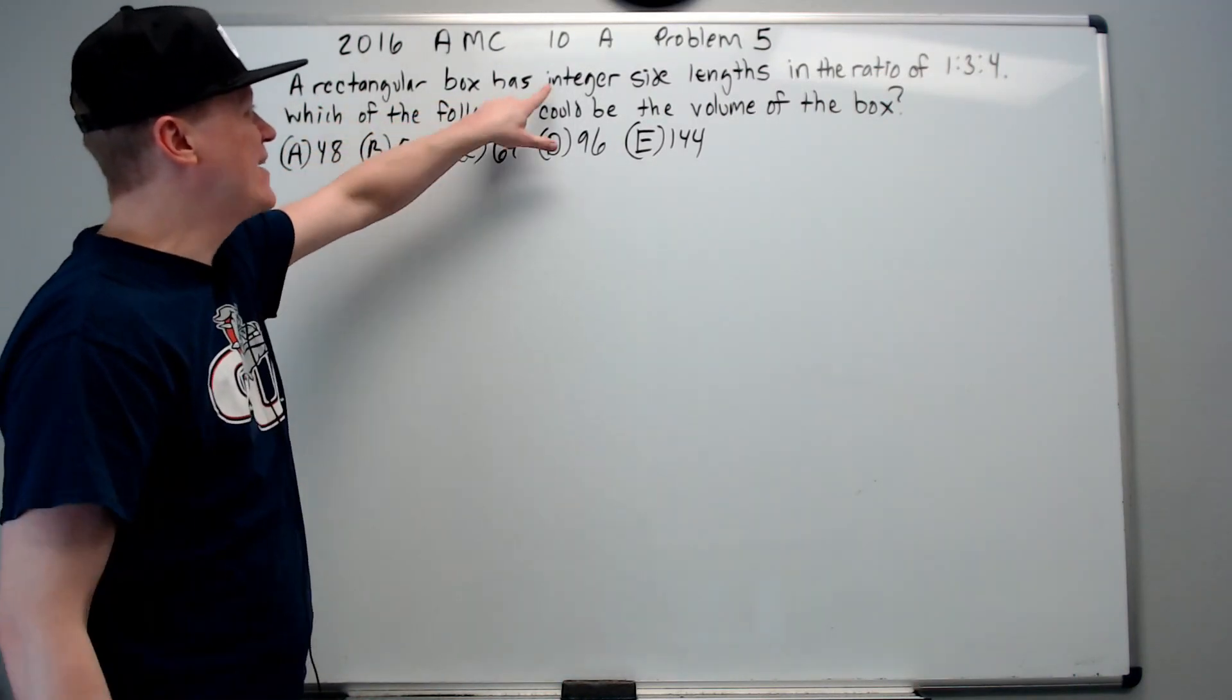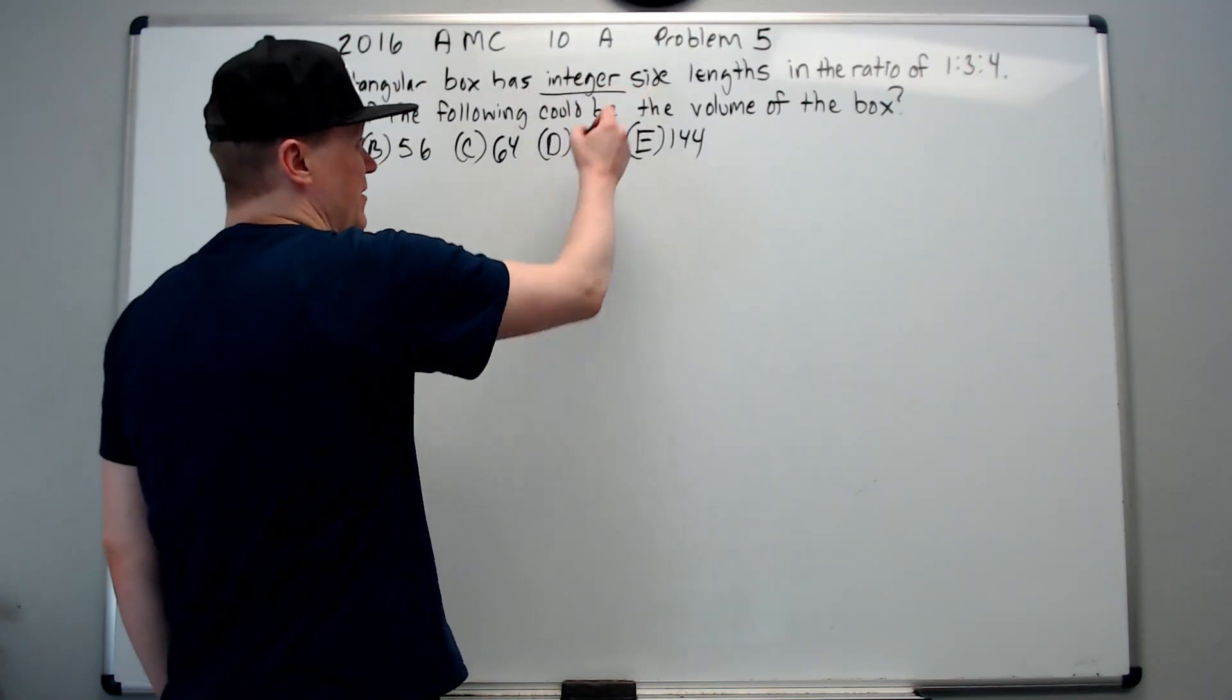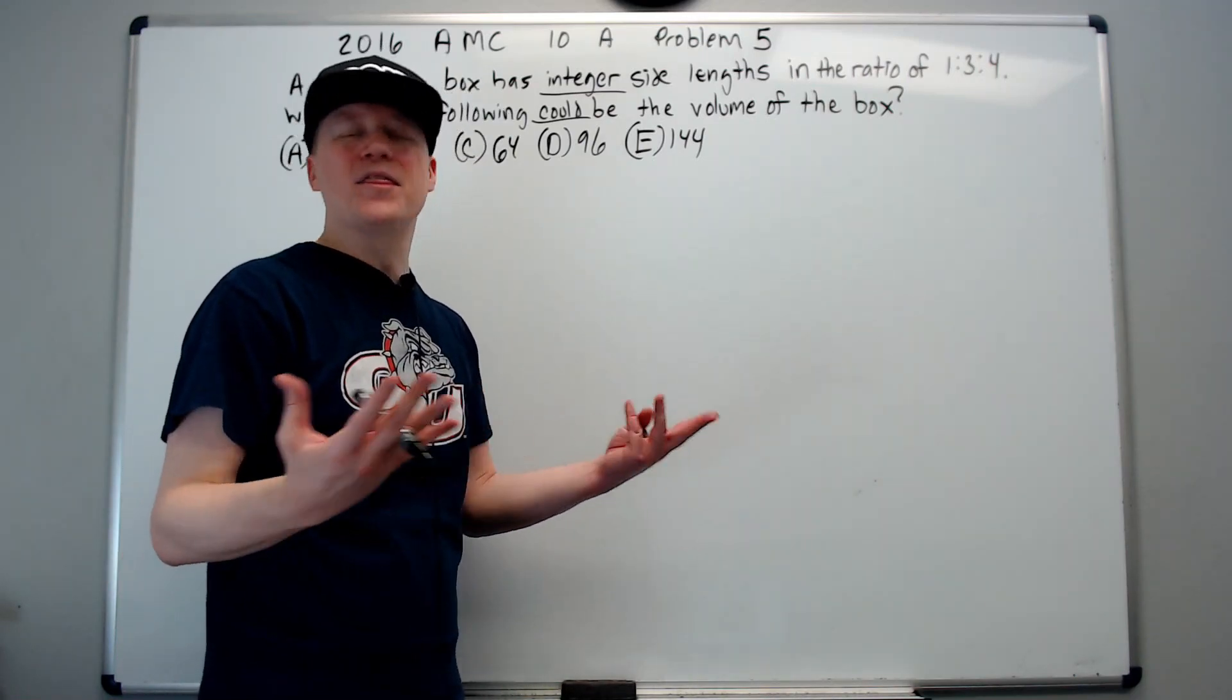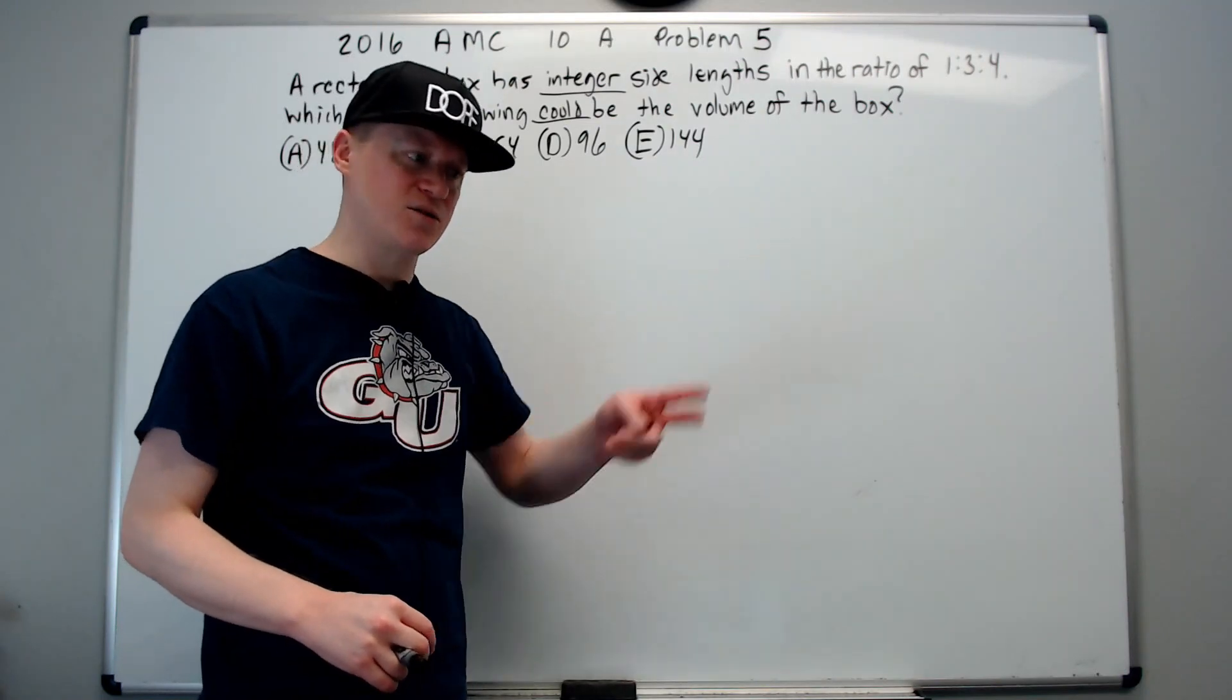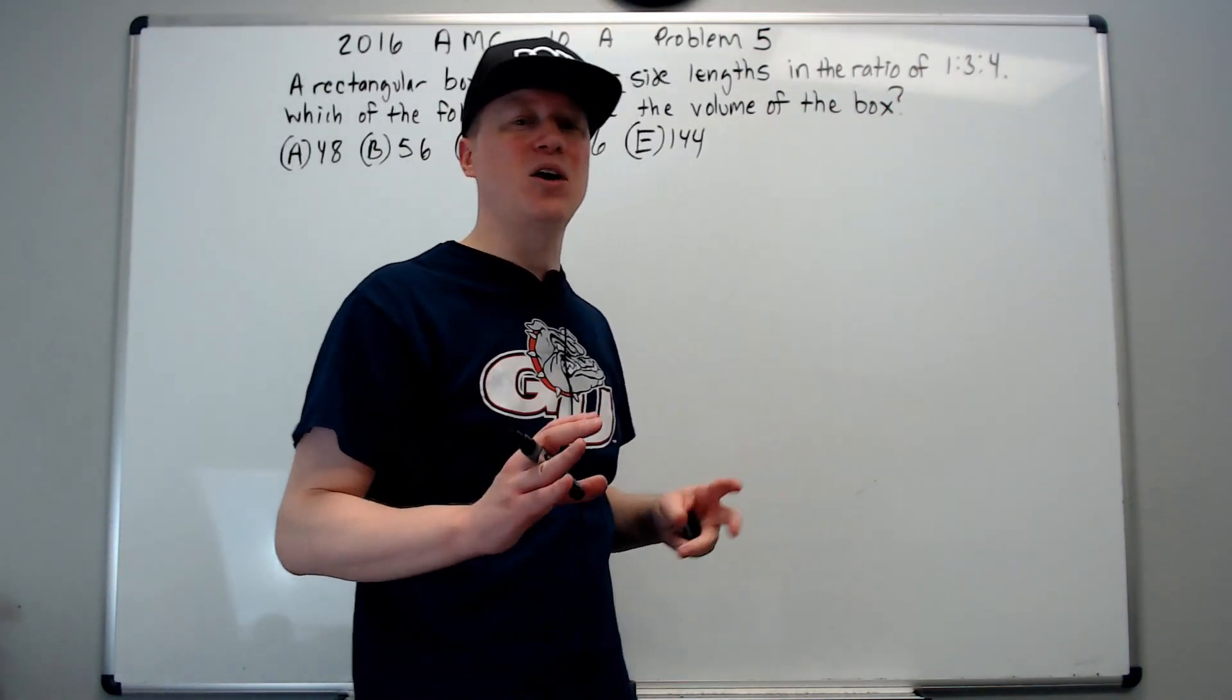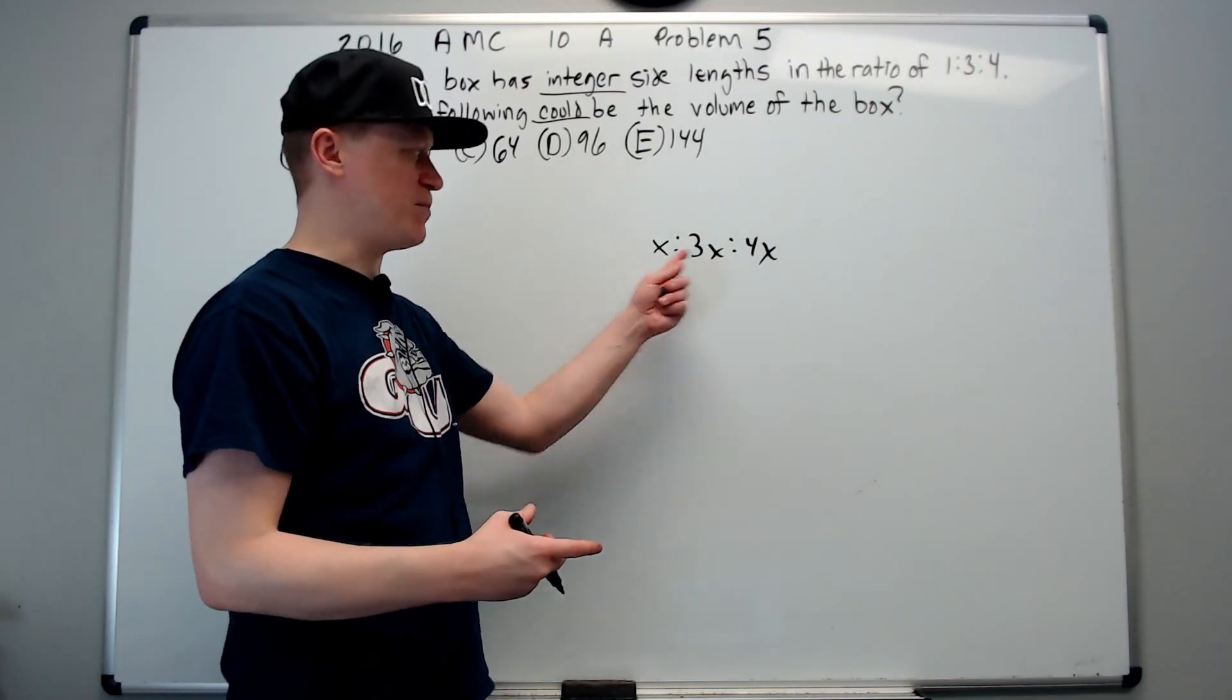A rectangular box has integer side lengths in the ratio of 1 to 3 to 4. Which of the following could be the volume of the box? Pay attention to qualifying words. Integer and could. Integer side lengths. There's kind of like little truisms. I say it's like green light go. It's like an automatic response to a stimulus. You need to have those kind of non-conscious thought reactions. The stimulus is a ratio written like this. What you want to do when a ratio is written like that is just put a little x next to all the numbers. Either mentally or actually do it on paper.